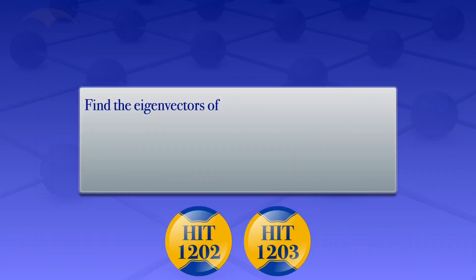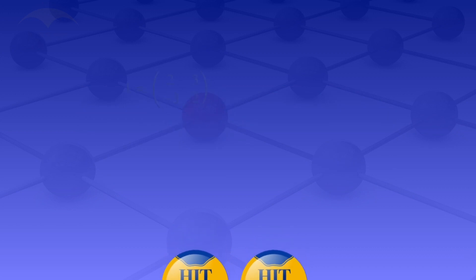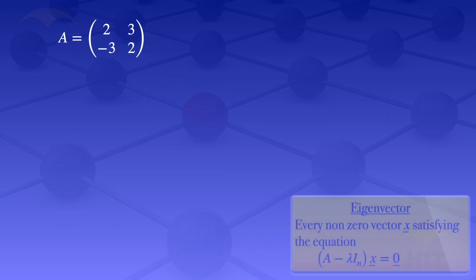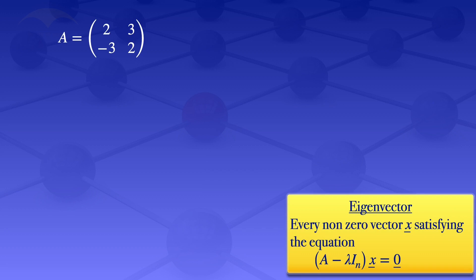In this tutorial I'm going to find the eigenvectors of the matrix A which has elements 2, 3, -3, 2. By definition, every non-zero vector x satisfying the equation (A minus lambda I_n) multiplied by x equals the zero vector is called an eigenvector. In our equation, lambda is an eigenvalue of the given matrix, so to find the eigenvectors we first need to find the eigenvalues.